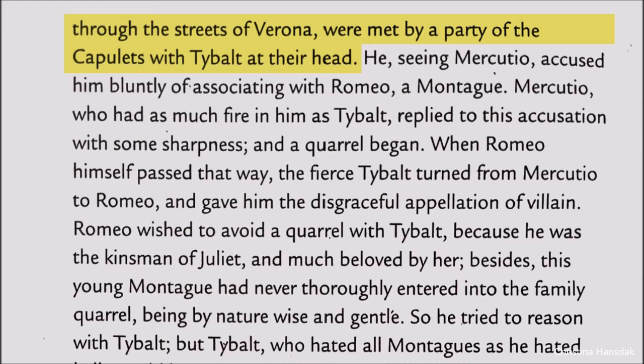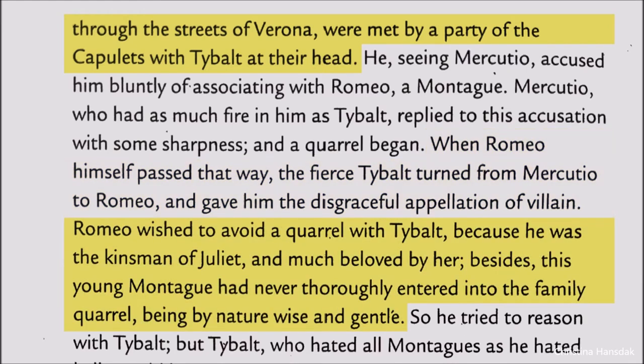Mercutio and Tybalt were throwing words at each other, when through the same street Romeo was passing by. Seeing Romeo, Tybalt turned from Mercutio and addressed Romeo as a villain. Romeo wished to avoid the quarrel, for as a Montague he had no interest in interrupting the Capulets. The most remarkable point was that Romeo was now kinsman of Juliet, and he had never thoroughly entered into the family quarrels.